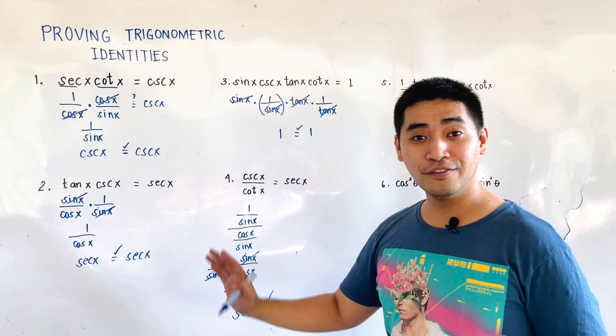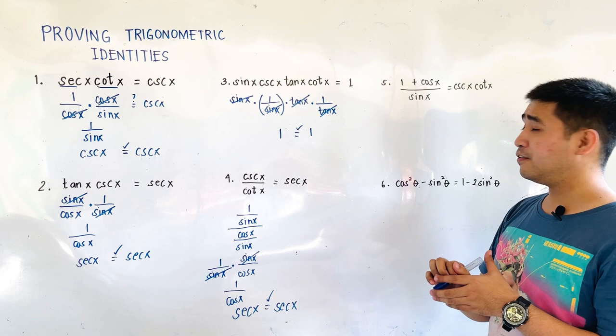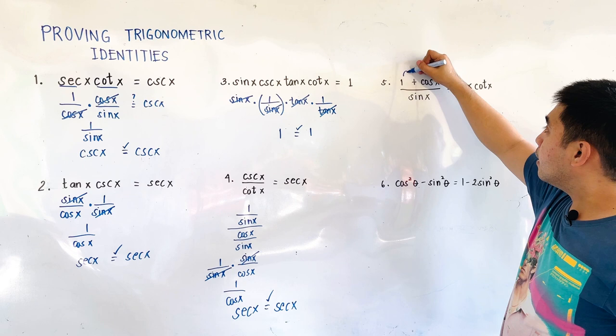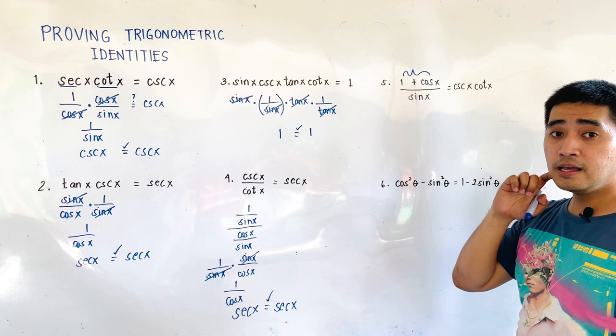Let's move on to our fifth example. This one involves a technique. If you are given terms in the numerator, just like this one — we are given 1 plus cosine of x over sine of x is equal to cosecant of x times cotangent of x — we will be choosing the more complicated side, which is 1 plus cosine of x in the numerator.